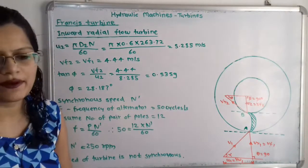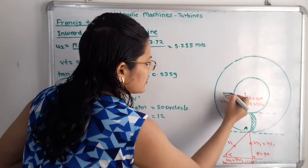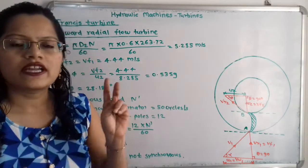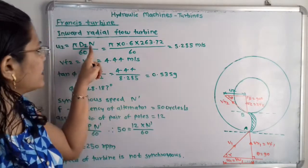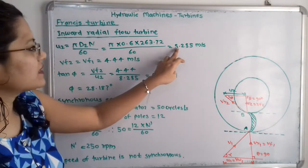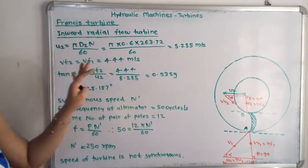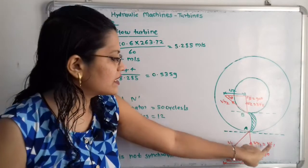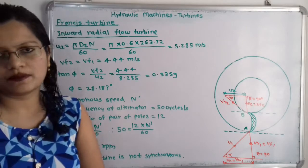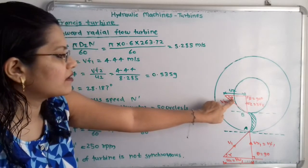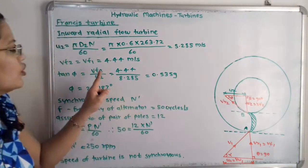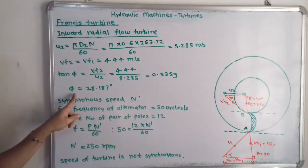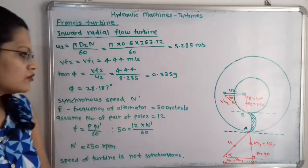For the vane angle at the outlet tip, we find u2 equals pi·D2·N/60. With D2 equals 0.6 m and N equals 263.72 RPM, u2 equals 8.285 m/s. Since Vf2 equals Vf1 equals 4.44 m/s, we use tan(phi) equals Vf2/u2 equals 4.44/8.285 equals 0.5359. Therefore phi equals tan⁻¹(0.5359) equals 28.187 degrees.